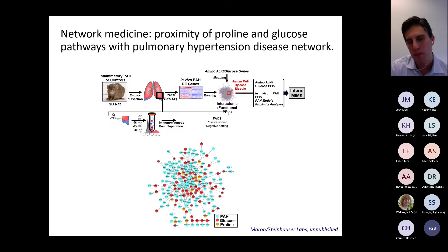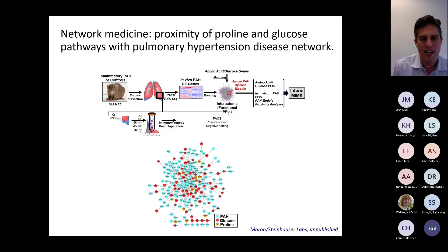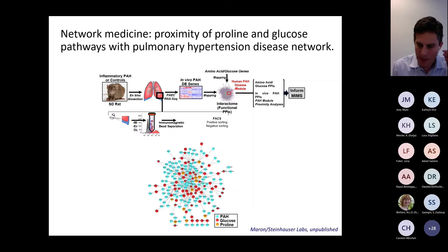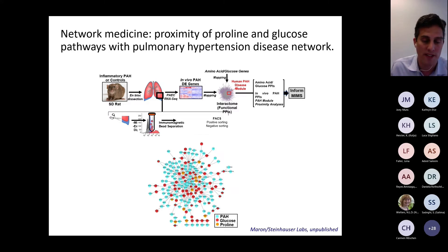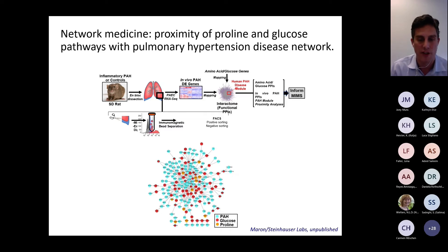We found that transcripts upregulated in these endothelial cells showed a marked degree of overlap with gene programs linked to the human disease. When we looked in an unbiased fashion at metabolic pathways close to or overlapping with these disease modules, this implicated both glucose metabolism—which was not surprising based on the existing literature—and the metabolism of the amino acid proline. This led to the hypothesis that both pathways were important for the disease and that there was convergence between them, since they were quite close in network space.